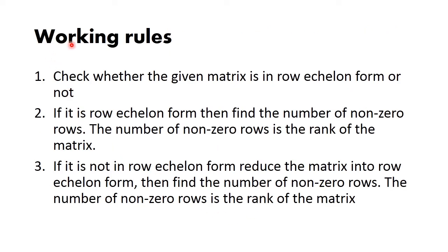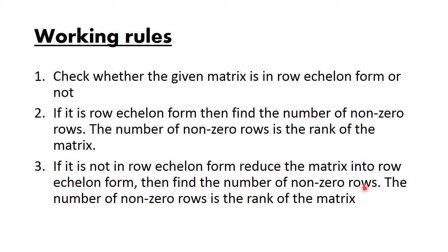Now I am going to explain how to find the rank of the matrix using row reduction method. First, check whether the given matrix is in row echelon form or not. If it is in row echelon form, find the number of non-zero rows — that number is the rank. If it is not in row echelon form, reduce the matrix into row echelon form, then find the number of non-zero rows, which gives the rank.